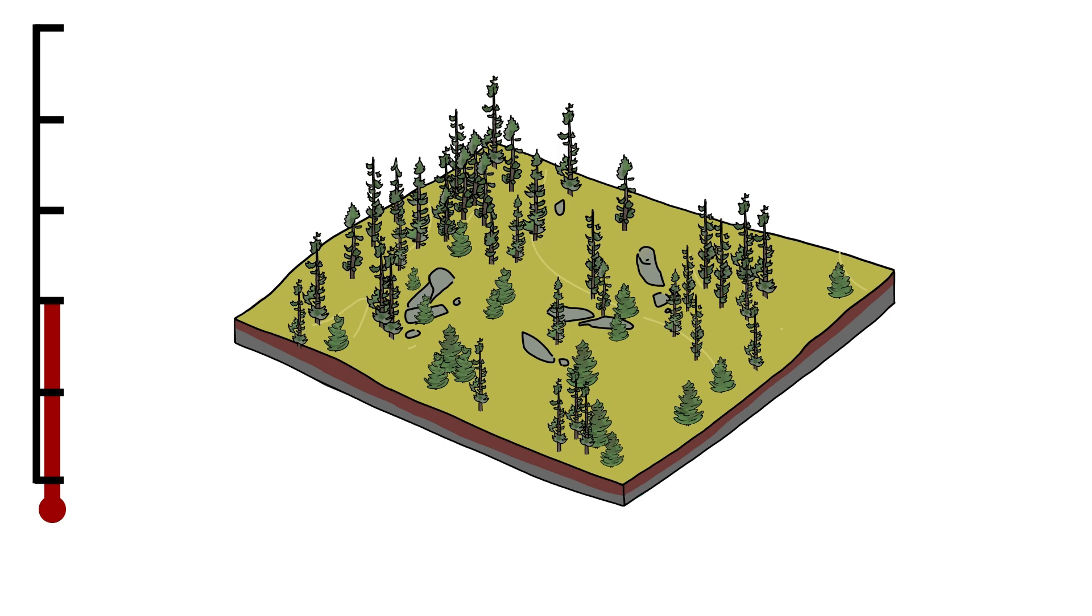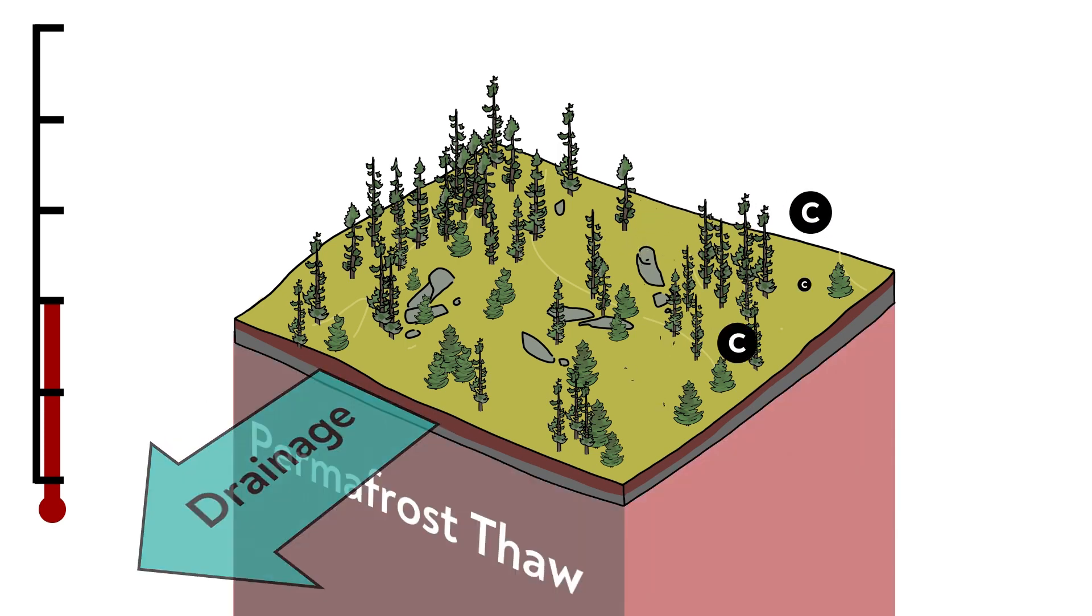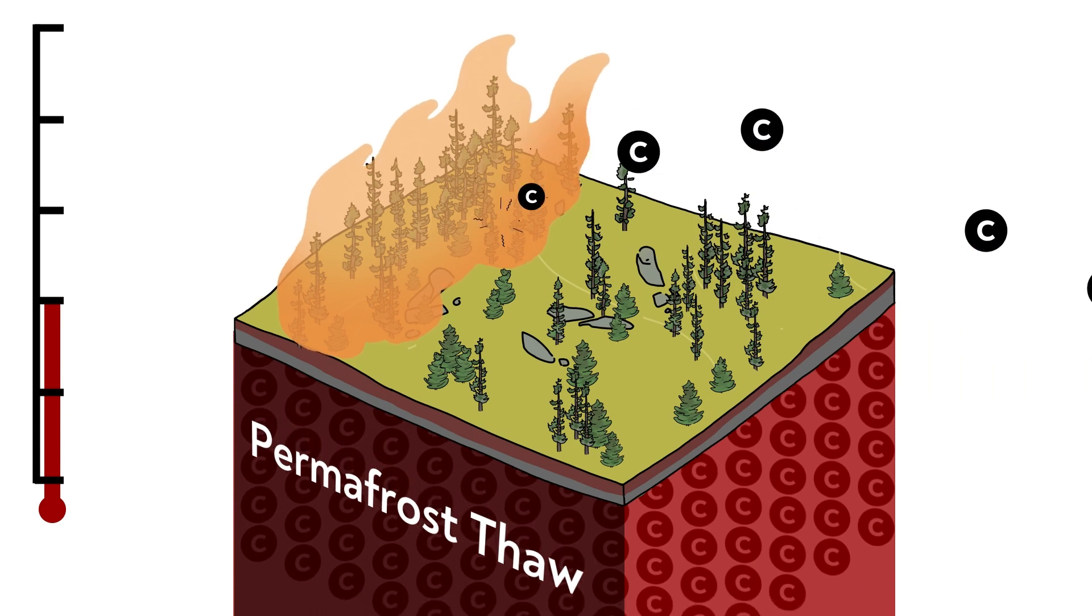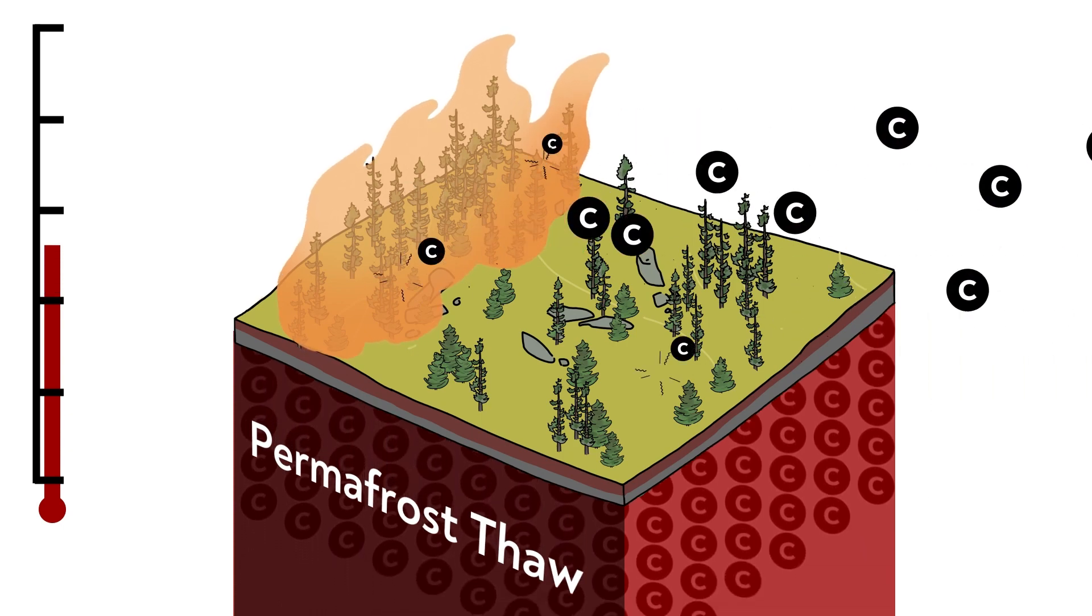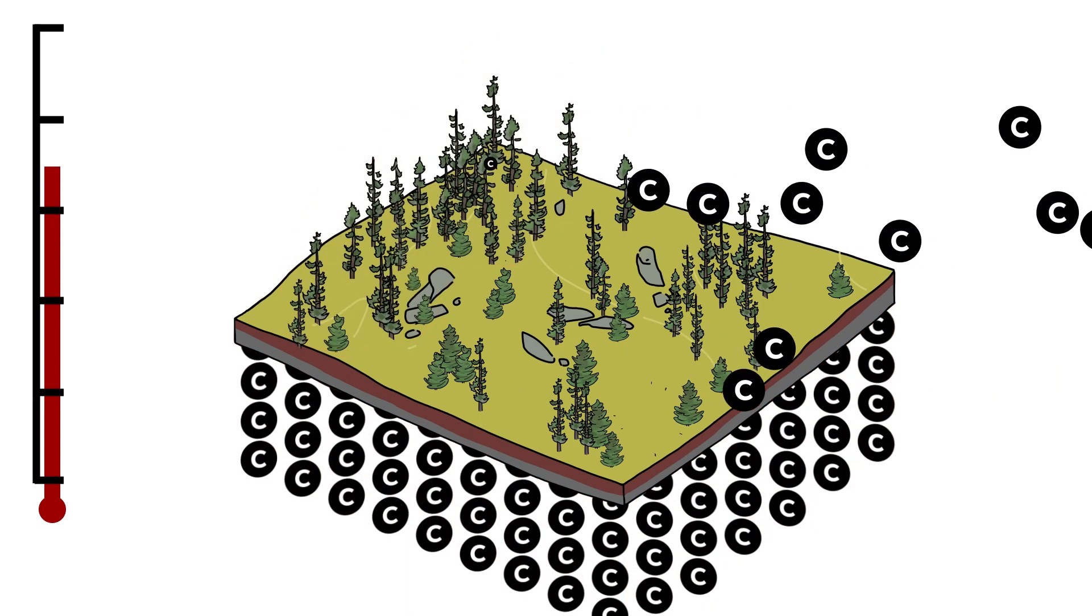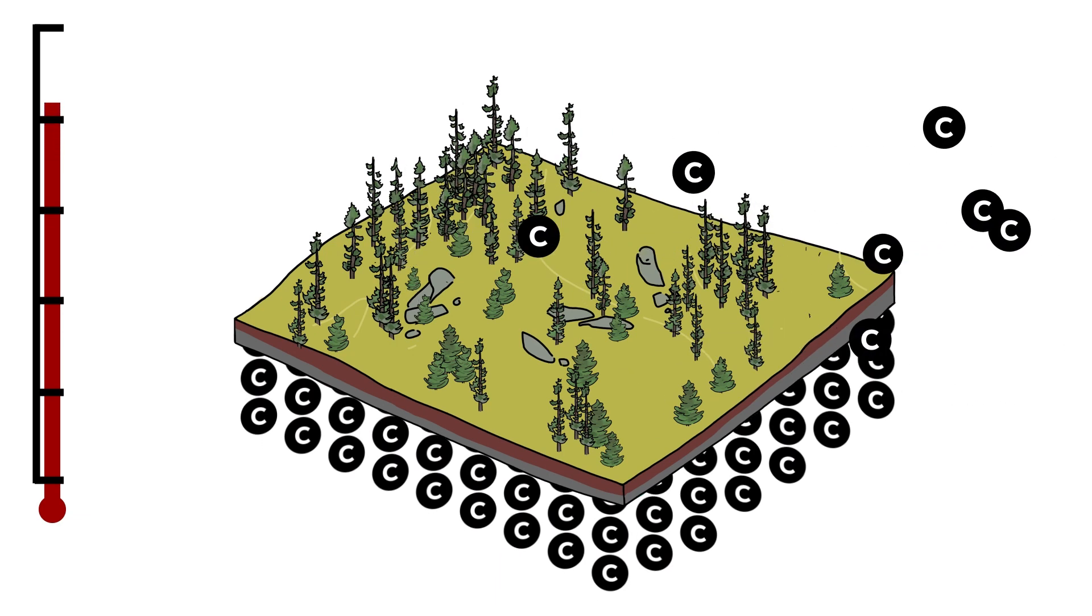However, the scales are tipping as disturbances like drainage, permafrost thaw, wildfires, and nutrient enrichment become more frequent and more severe, leading to massive changes in carbon emissions from peatlands.